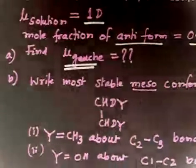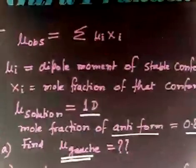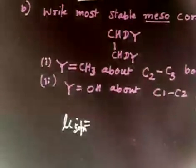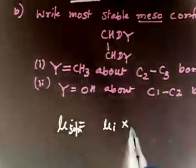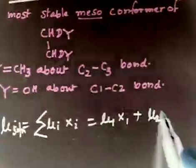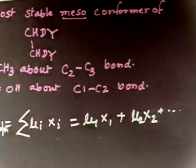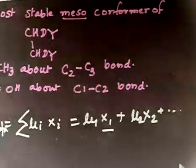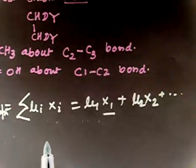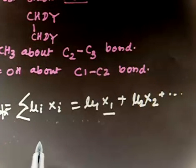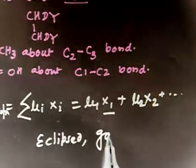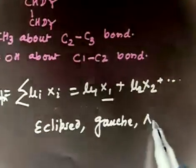μ_solution is given as the sum μᵢxᵢ, that is μ₁x₁ + μ₂x₂ + μ₃x₃, where x represents the mole fraction of each stable conformer. In any case, you can have three stable conformers: eclipsed, gauche, and anti (the staggered one).